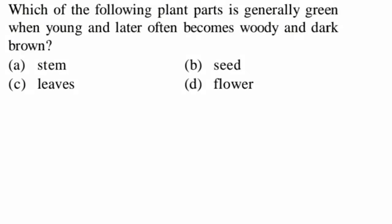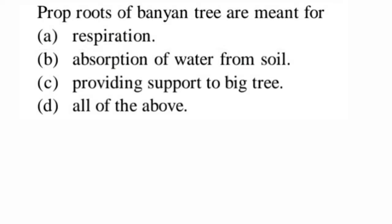Next question: which of the following plant parts is generally green when young and later often becomes woody and dark brown? The answer is stem, because in early stages the stem is green, but later it becomes woody and dark brownish due to secondary xylem activity. So option A is correct.